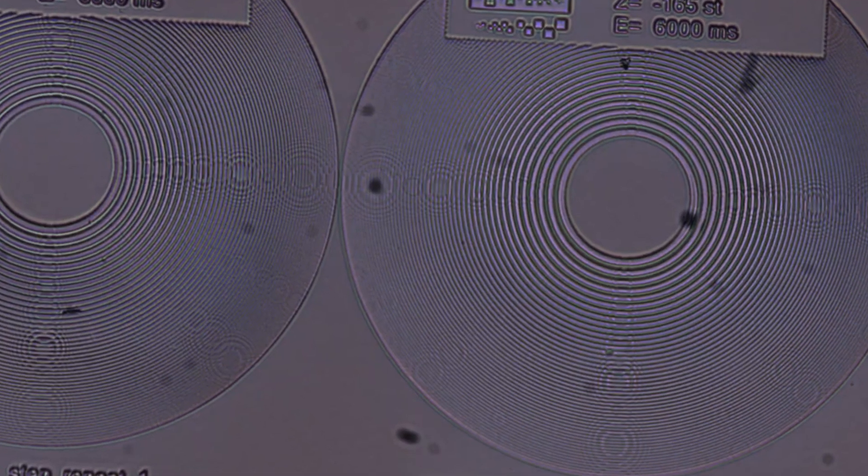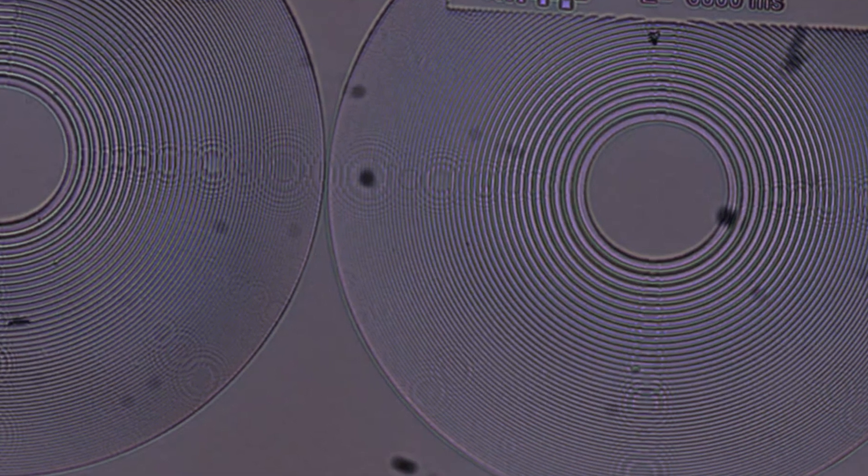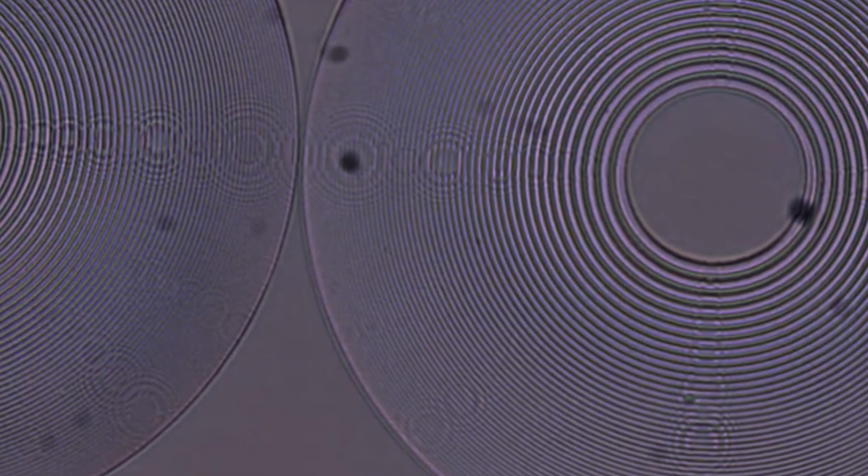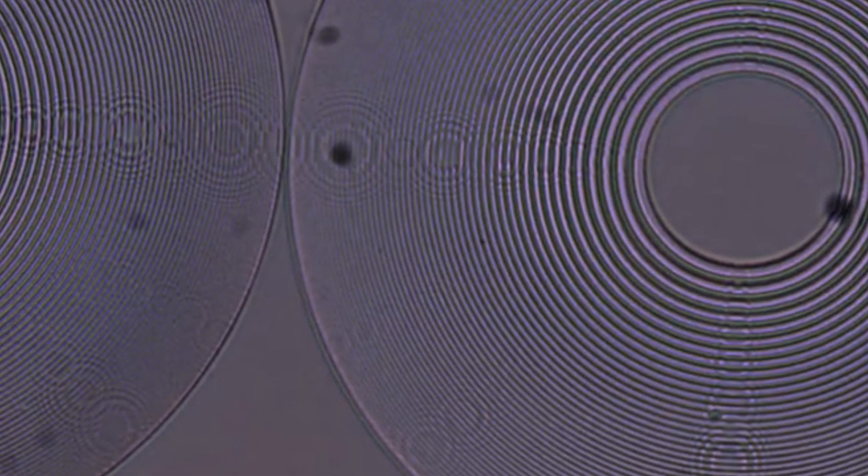Here you see the patterns of a few diffractive lenses under a microscope. And, as one of my viewers pointed out, they are actually called Fresnel zone plates.